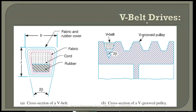The cross-section is somewhat more complicated compared to the previous flat belt cross-section, which is a rectangular one. Look at the figure — this is the cross-section of a V-belt. These are the high-strength material cords, and this is rubber. These cords and rubber bind together with a fabric, and the entire part is molded in a rubber outer covering.